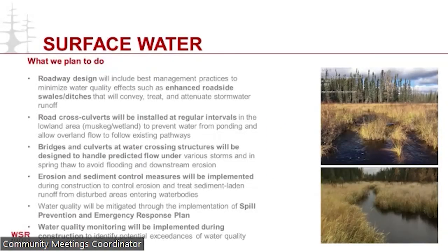In terms of what we plan to do to mitigate potential effects on surface water, we can use roadway design to effectively manage runoff, use frequent cross culverts in muskeg areas to prevent water backup, design crossing structures to handle higher flow control measures, and implement a spills prevention and emergency response plan.